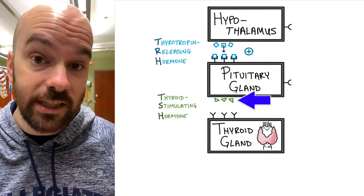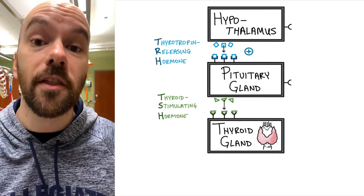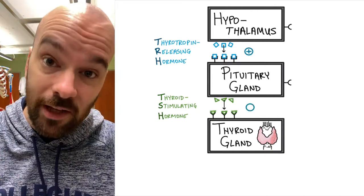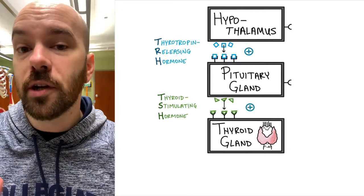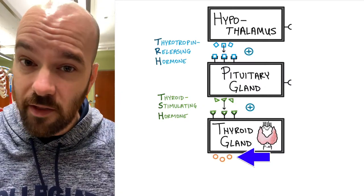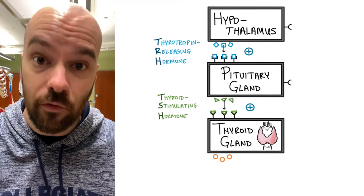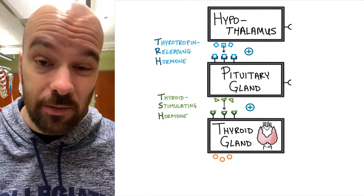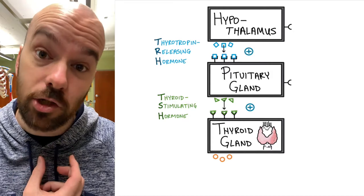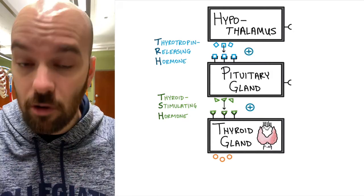TSH, represented in the diagram by green triangles, is released by the pituitary gland and travels through the bloodstream to the thyroid gland in the neck. This is a stimulatory or excitatory effect causing the thyroid gland to produce its own hormone. TSH also generally causes the thyroid gland to grow or increase in size over time. A lack of TSH would cause the thyroid to shrink, while too much TSH would cause it to grow larger over time.